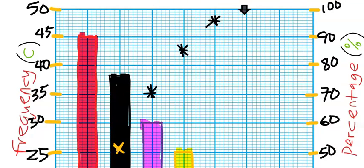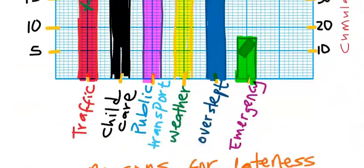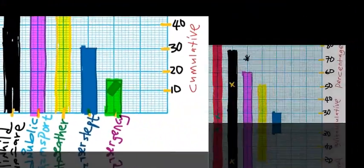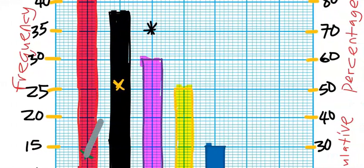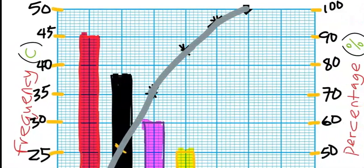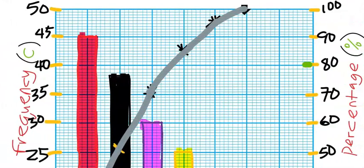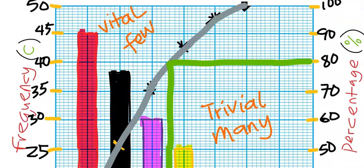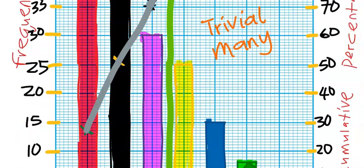Next, join all the cumulative percentage points. Next, for the 80-20 principle, draw, this is 80%. Draw a line until it touch the cumulative percentage curve. Next, you bring it down. Hence, these are the vital few, and these are the trivial many.